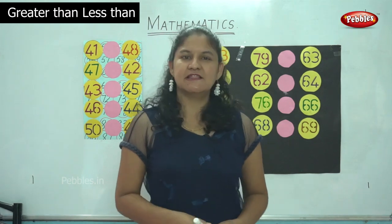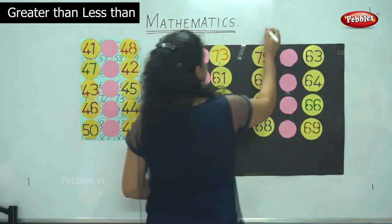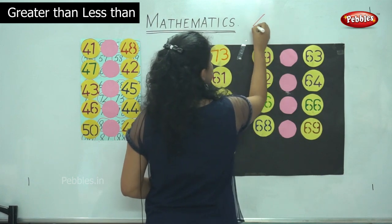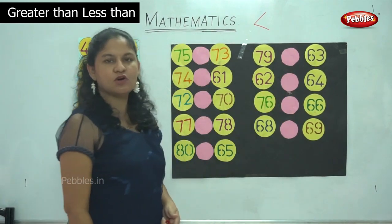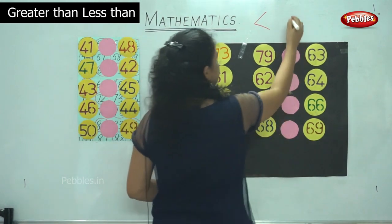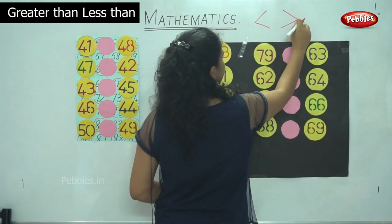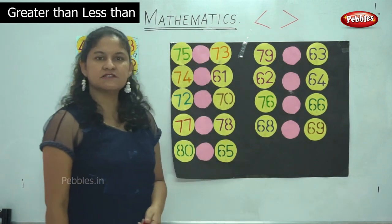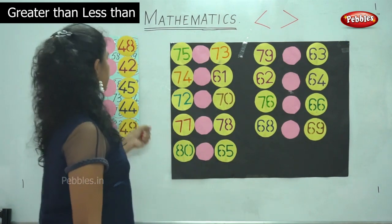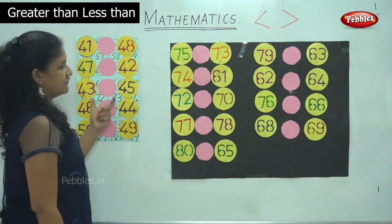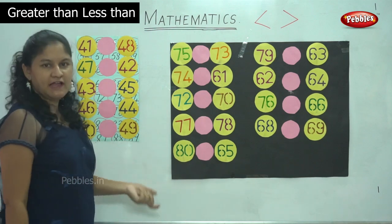Our next topic will be the greater number and the lesser number. The mouth opens towards the greater number or the bigger number, and the tapering hand comes towards the smaller number. We are going to see the greater than and lesser than sign for the numbers from 41 to 80.